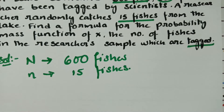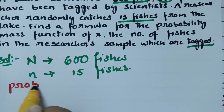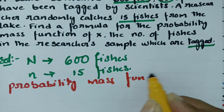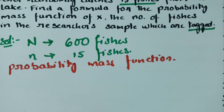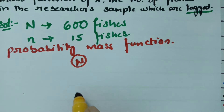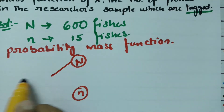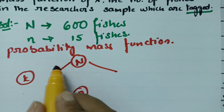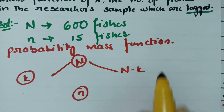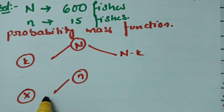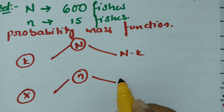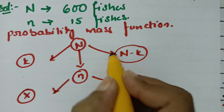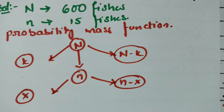According to the hypergeometric distribution, the probability mass function is given as follows: if N is the total number of the population and small n is the sample size, then k is the total number of successes. We subtract from N minus k, and x is to be found. We also subtract small n minus x from small n. This is the notation.